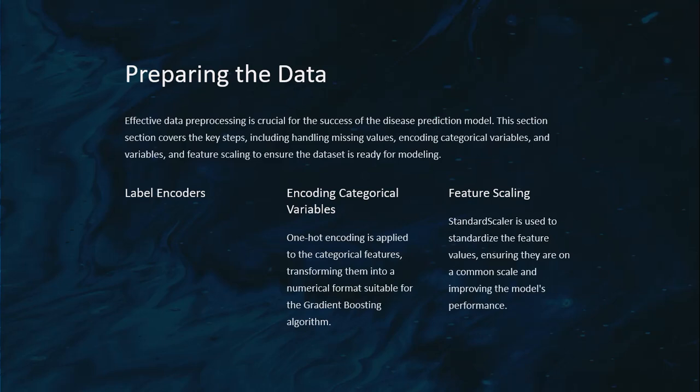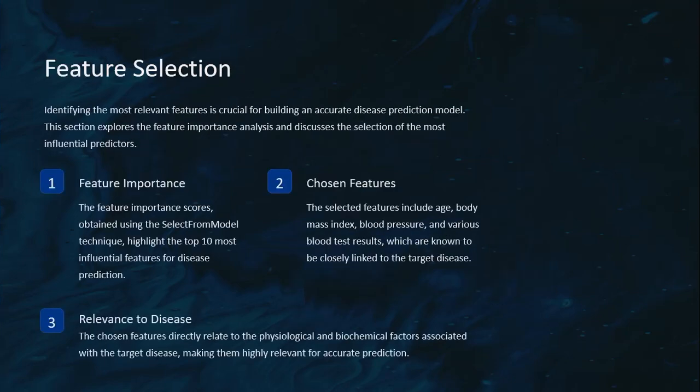For feature scaling, standard scaling is used to standardize feature values, ensuring they are on a common scale, improving the model's performance. For feature selection, we used the correlation matrix and also chose features based on relevance to disease — the chosen features directly relate to the physiological and biochemical factors given in the dataset.